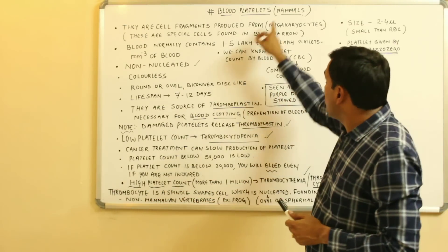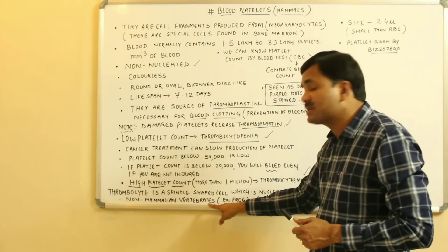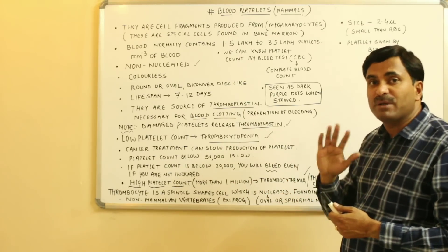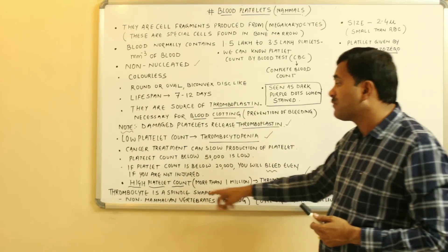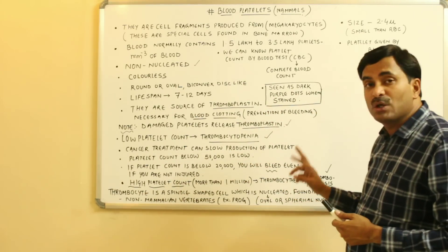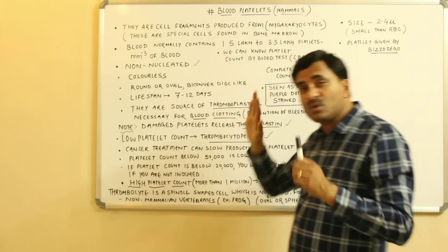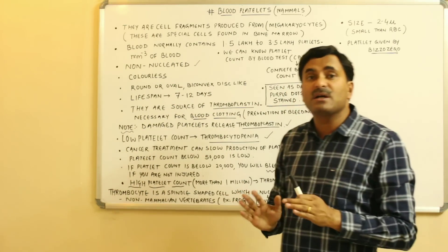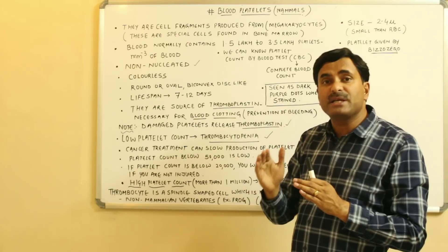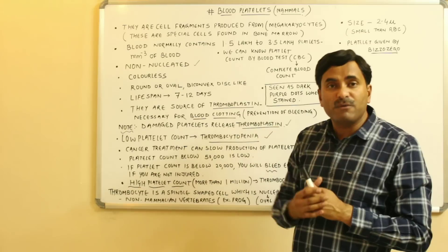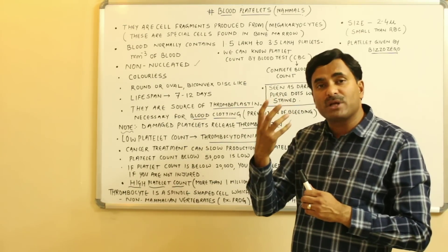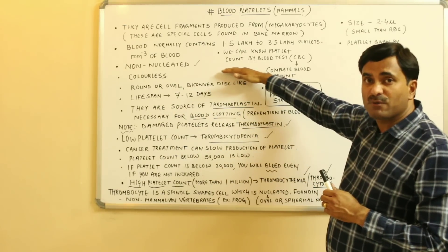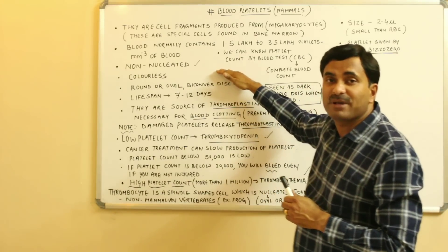Thrombocytes are found in non-mammalian vertebrates. For example, frogs are vertebrates but not mammals, so in frogs we use the term 'thrombocyte,' not 'platelet.' Overall, platelets are very important for the body as they prevent excessive bleeding by enabling blood clotting when the body is injured. They are important from an examination perspective as well. You can take a screenshot to maintain your notes.